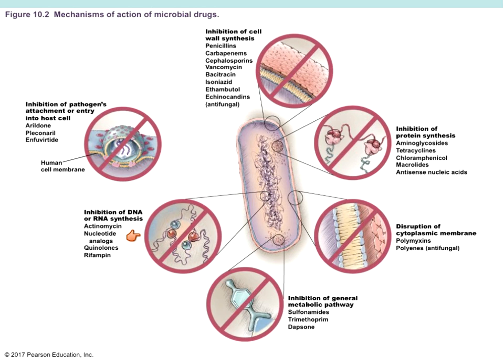Inhibition of DNA and RNA synthesis — drugs that do this jumble up the instructions of the microorganism from DNA to RNA to protein. That keeps the microbe from undergoing binary fission or performing any other necessary functions, like making different enzymes and lipids, and it definitely won't have the energy it needs.